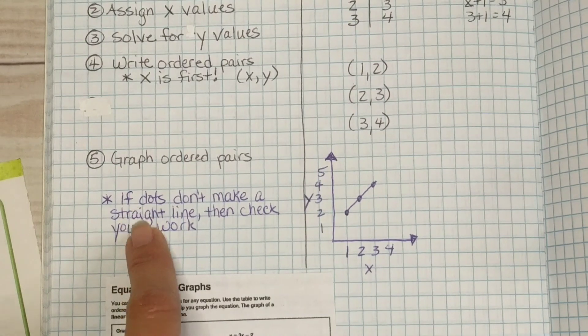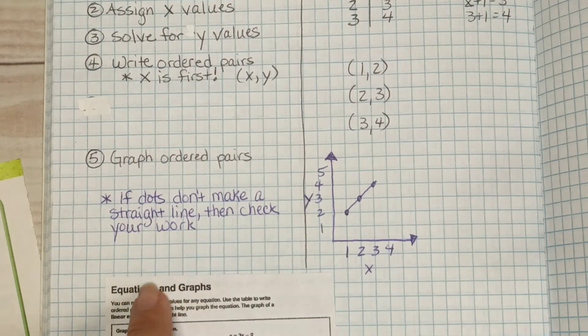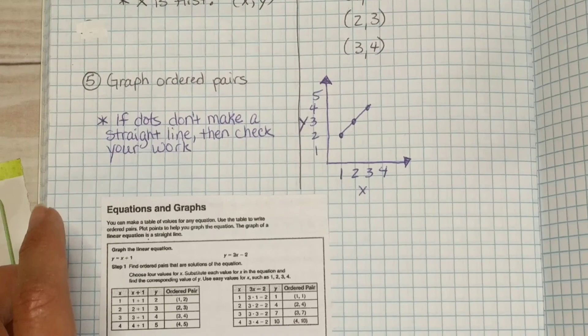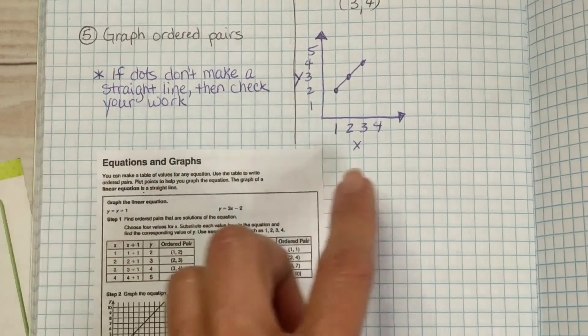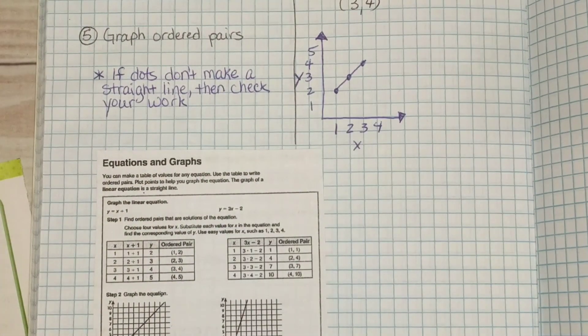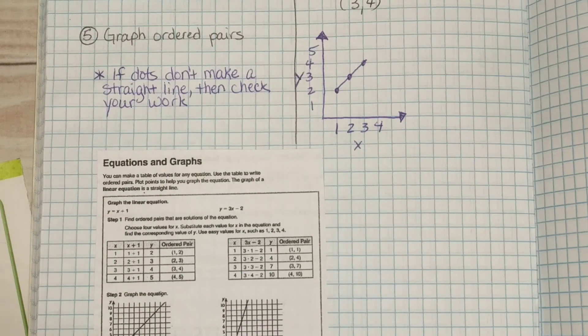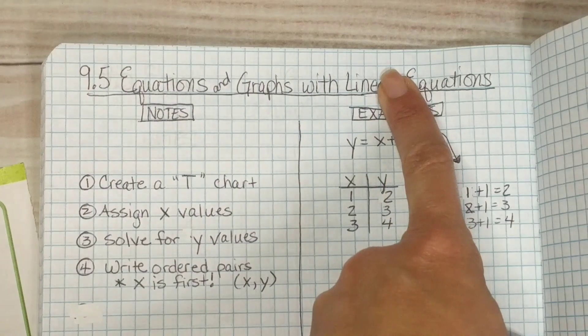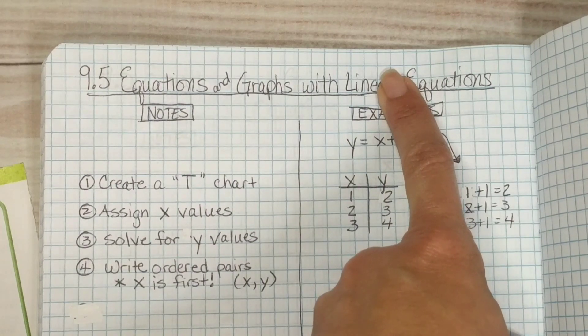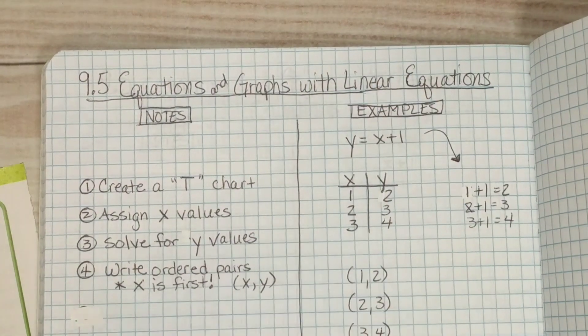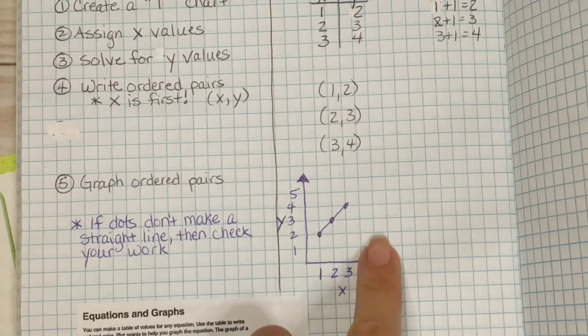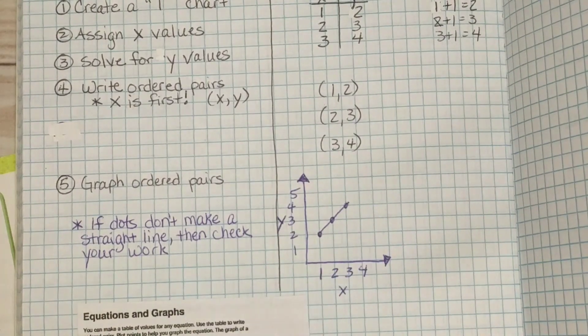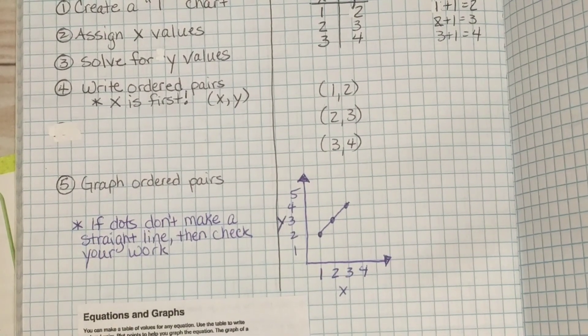Remember that if the dots don't make a straight line then check your work because something's gone wrong. If you're graphing a linear equation it makes a line. Notice the root of the word linear is line. It should make a line. If it doesn't make a line it's no longer a linear equation. So it should make a nice straight line when you're done.